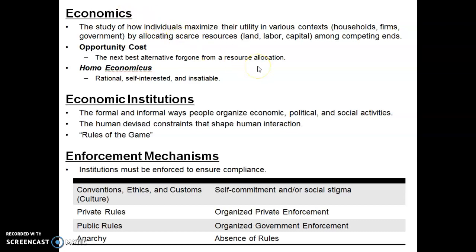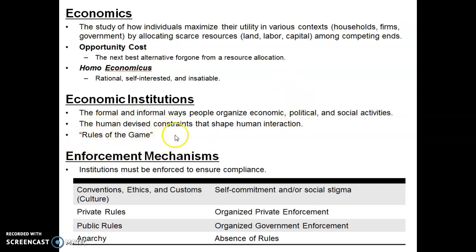Opportunity cost and homo economicus are fundamental to understanding human behavior in the context of the economic problem of scarcity. Once we understand what economics is, we can move on to economic institutions — the formal and informal ways people organize their economic, political, and social activities. These represent the rules of the game. Human beings deal with scarcity every day, but we deal with that problem through certain rules.